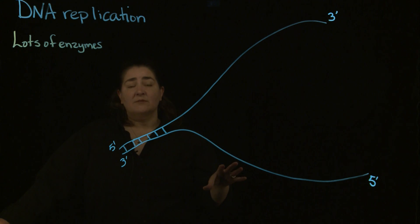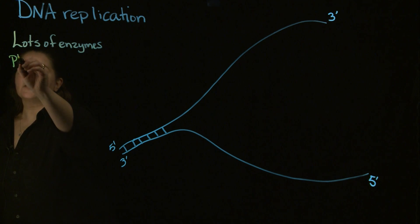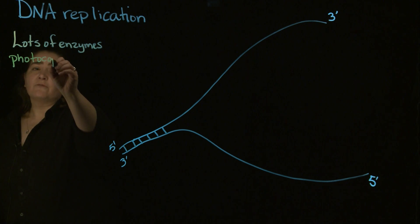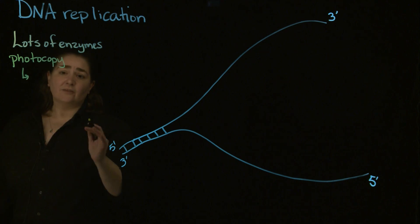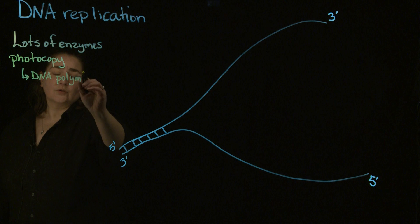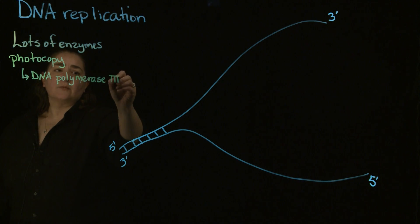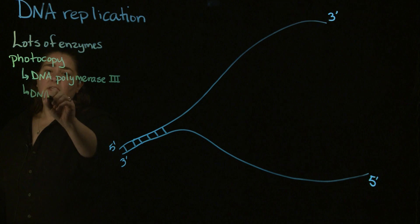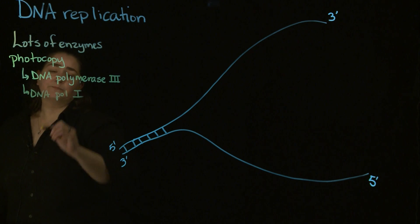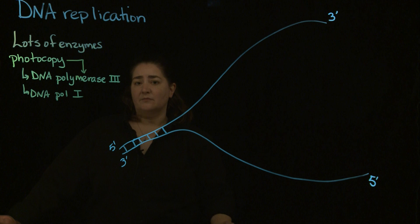I'm going to talk about some of the enzymes and what's going to happen. When we are replicating the DNA, we want to make a photocopy. The photocopier enzymes that we have are going to be DNA polymerase. There's DNA polymerase 3 that I want you to know, and DNA polymerase 1 as well. DNA polymerase 3 is your main photocopying enzyme. This is the enzyme that's going to make a copy of the DNA.